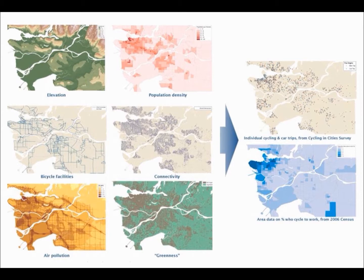This is just an example of combining multiple data layers to understand the question: what influences cycling? And this is the only set of maps I did not make. These are by Megan Winters at UBC, now at SFU.